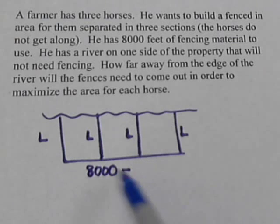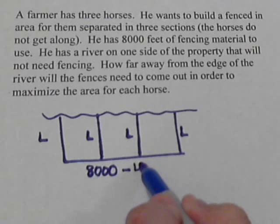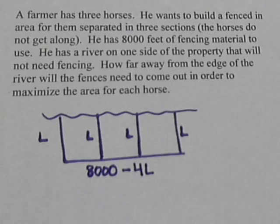So we're going to take away one, two, three, four L's from that section. And so that'll give us the total length of this side. All 8,000 feet minus the four pieces we use here.